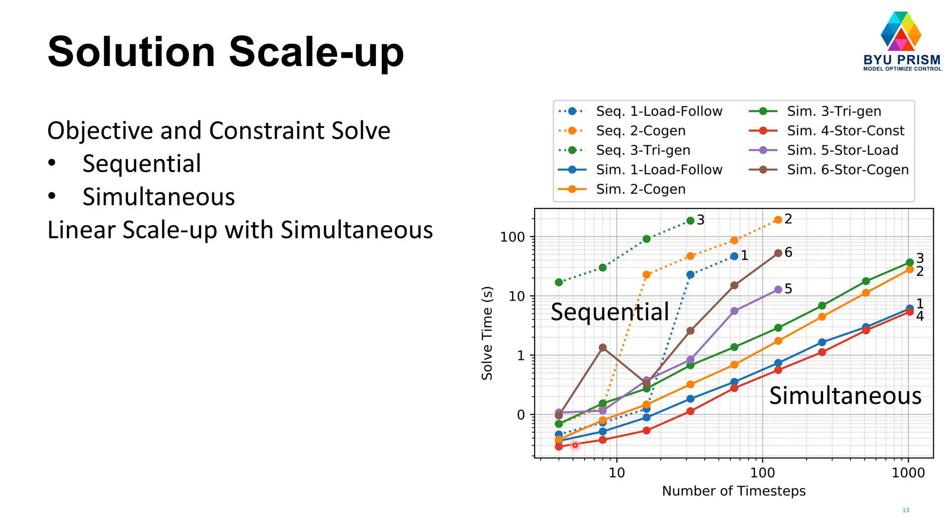So interestingly enough, with just a few number of time steps, you have very few number of decision variables, you can get it in one iteration of the sequential, but later on you see if you increase the problem size and have more degrees of freedom, it takes more iterations of that, and so you see longer solve times with the sequential approach.